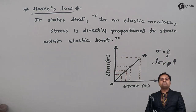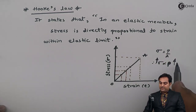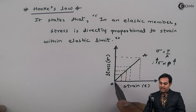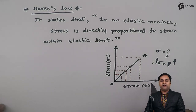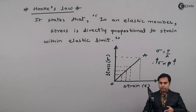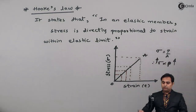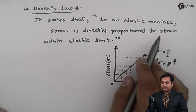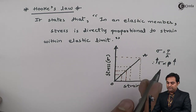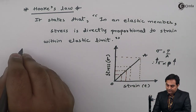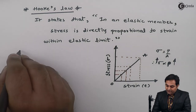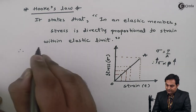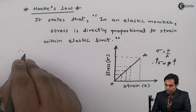When I am increasing the stress, at the same time strain increases. So this is Hooke's Law: in an elastic member, stress is directly proportional to strain. Therefore, from Hooke's Law I can write down the mathematical relationship.